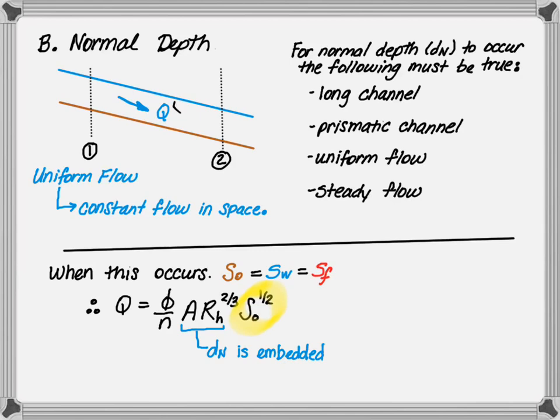The flow is equal to phi divided by roughness, times the cross-sectional area, times the hydraulic radius to the two-thirds power, and the bed slope to the one-half power. The normal depth is embedded in the area and hydraulic radius.